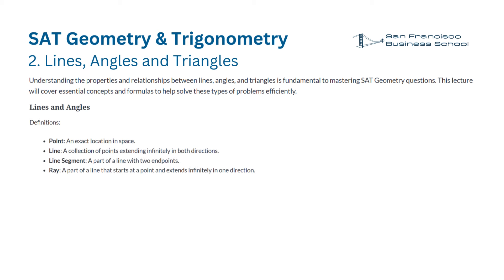Lines and Angles — Definitions. Point: an exact location in space. Line: a collection of points extending infinitely in both directions. Line segment: a part of a line with two endpoints. Ray: a part of a line that starts at a point and extends infinitely in one direction.